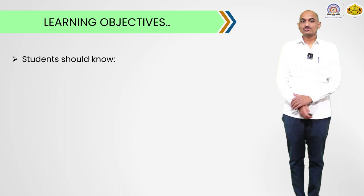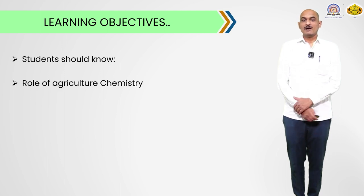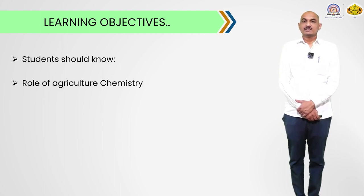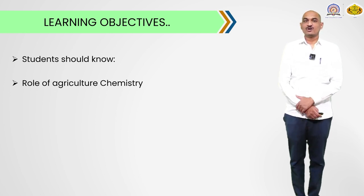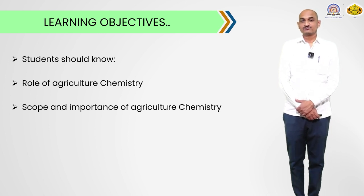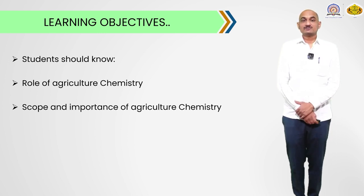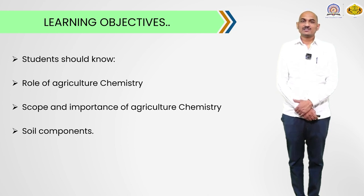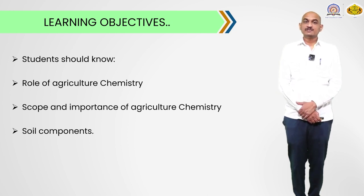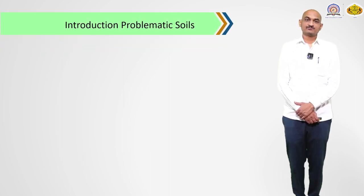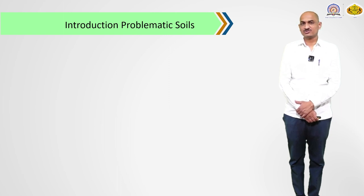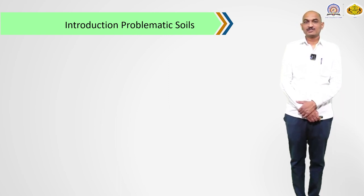After this session, students should know about the role of agricultural chemistry and the types of problematic soils — acidic soil and alkali soil — and how they are formed. Along with that, the importance and scope of agricultural chemistry, the different soil components, and how the pH of soil is changed. These are all the learning objectives of today's session. Now let's start with the introduction part.